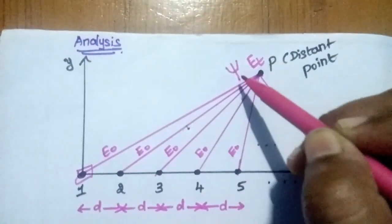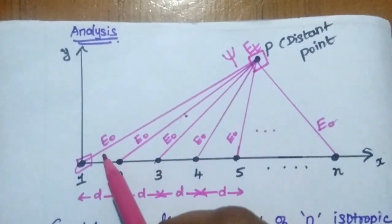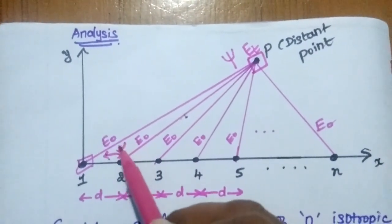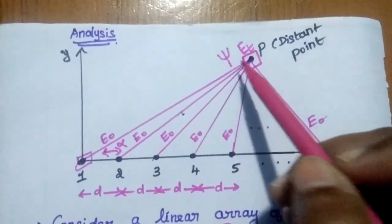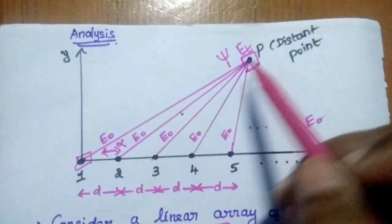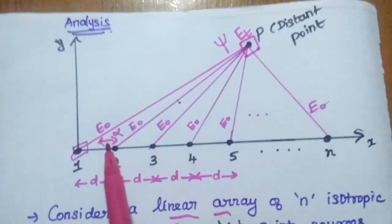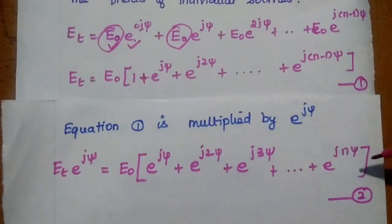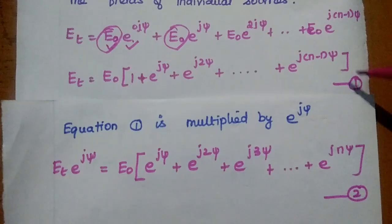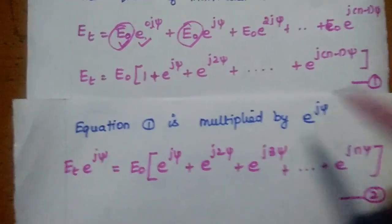To summarize: ψ is the total phase difference at the distant point P, and α is the phase difference between adjacent elements. For further simplification, we multiply the first equation by e^(jψ) on both sides, giving E_T · e^(jψ) = E₀ · [e^(jψ) + e^(j2ψ) + ... + e^(jNψ)]. This is the second equation.